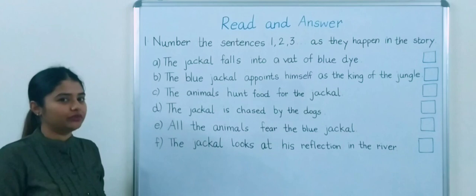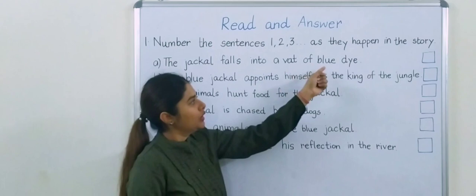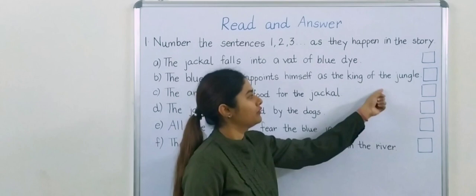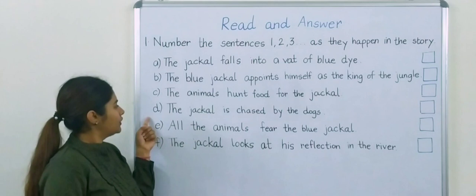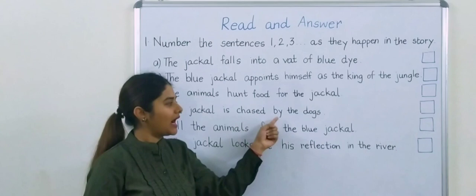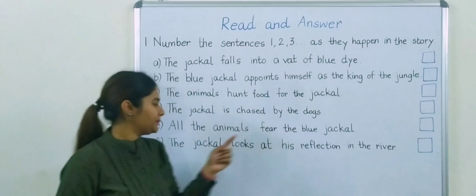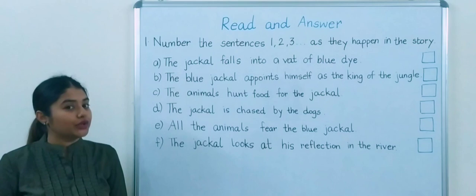First we will read these sentences and then we will do the numbering. A is, the jackal falls into a vat of blue dye. Second is, the blue jackal appoints himself as the king of the jungle. Third is, the animals hunt food for the jackal. Fourth is, the jackal is chased by the dogs. Next is, all the animals fear the blue jackal. Next is, the jackal looks at his reflection in the river.